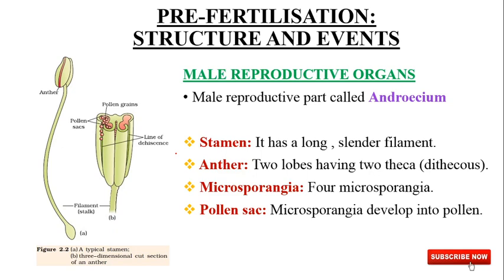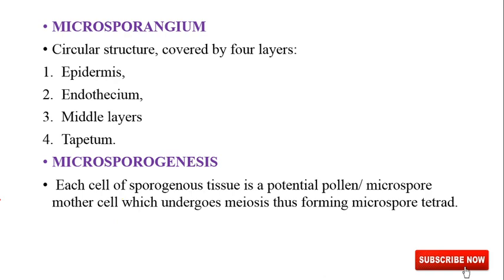The male reproductive part, androecium, consists of stamen, anthers, microsporangia, and pollen sacs. This is a proper structure of a stamen which consists of an anther on its tip. The anther is a bilobed structure — it consists of two lobes. If we cut an anther transversely, we can see it is having two theca. Inside those theca are present four microsporangia. These microsporangia are having longitudinally arranged pollen sacs present inside them, and inside the pollen sacs are present the pollen grains, which are the red bead-like structures.